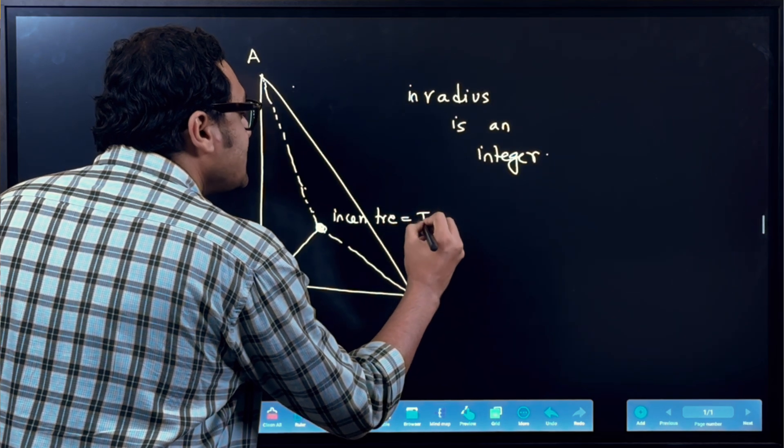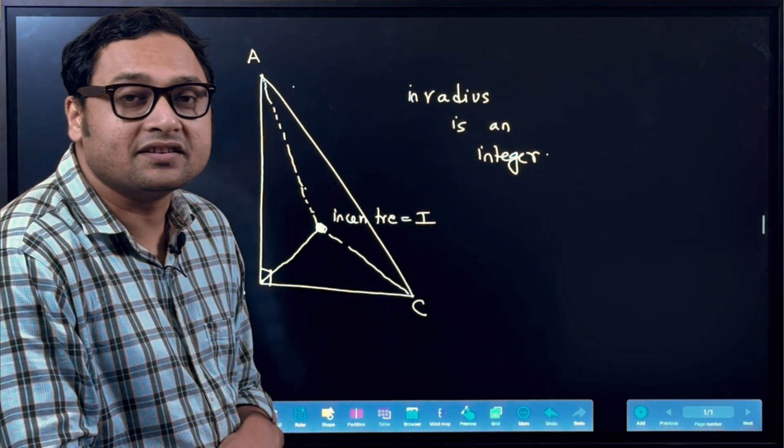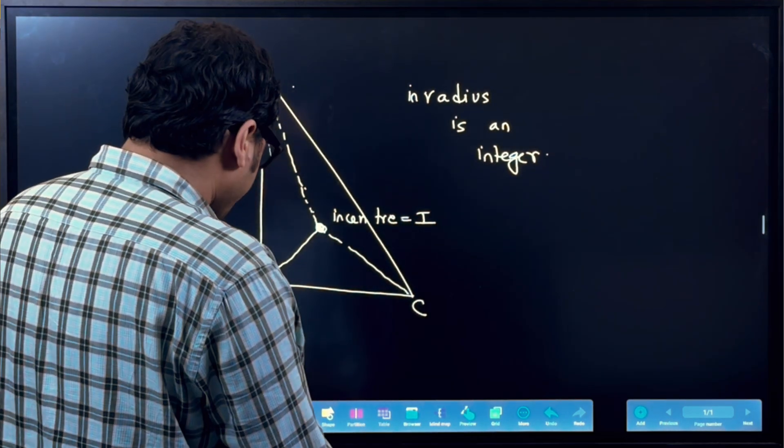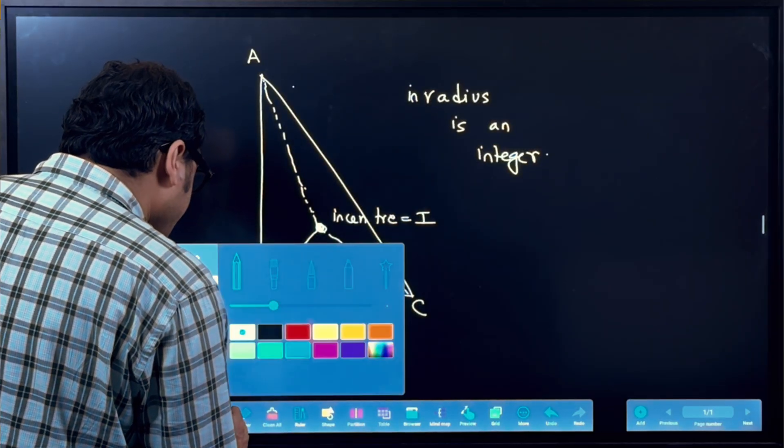This particular point is called the in-centre of the triangle. And it is often denoted by the letter I. Okay, so what is an in-radius then?